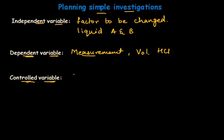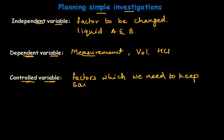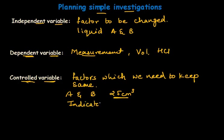The controlled variable refers to the factors we keep the same during the experiment. In our example, we kept the volume of liquid A and B the same — 25 cm³ of each. We also used the same indicator and the same number of drops of indicator. If the experiment required heat, we would also need to keep the temperature the same.